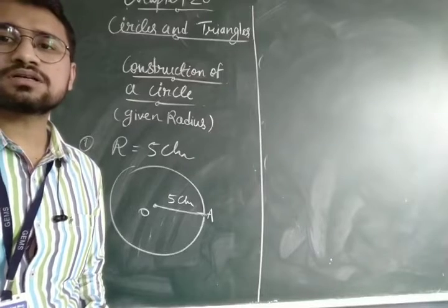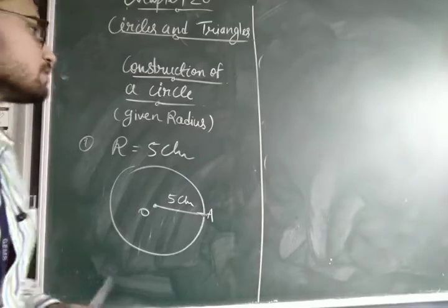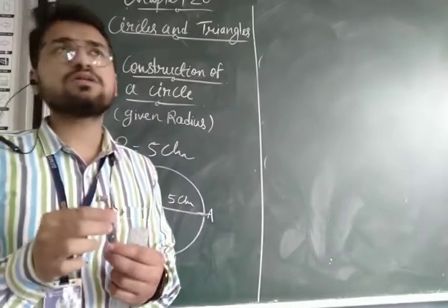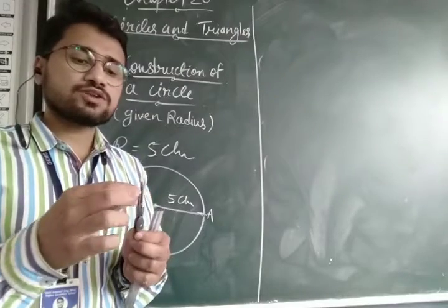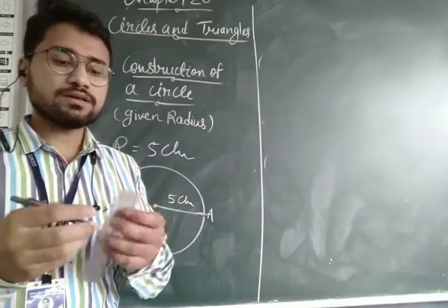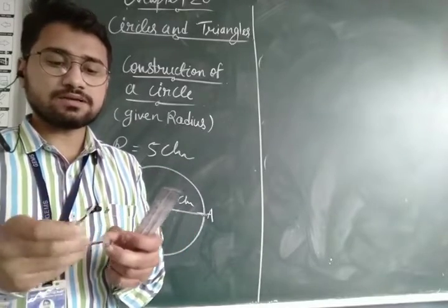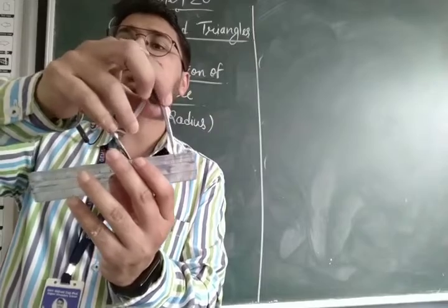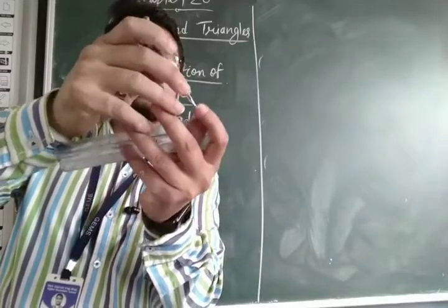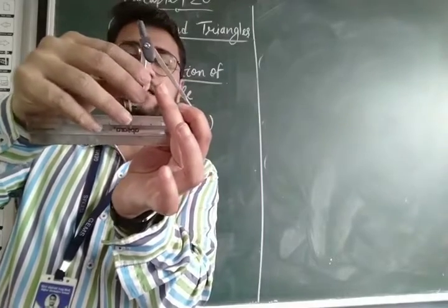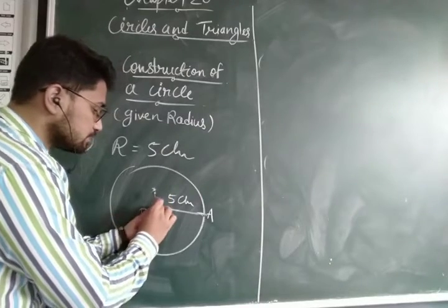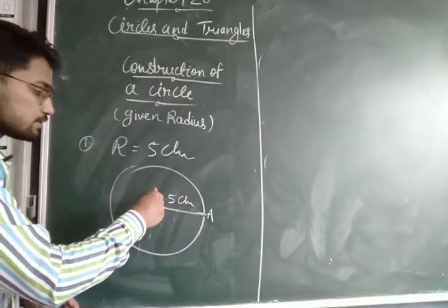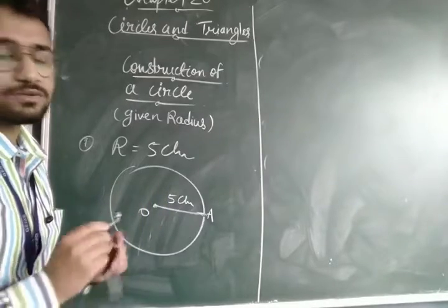Now our next topic is how to construct a circle with a given radius. If the radius of the circle is given, you can construct the circle with the help of a compass and a pencil. You will spread the compass on the scale — for example to five centimetres. Then place the needle portion at the centre and move the pencil portion around to make one complete round, and you can construct a circle.